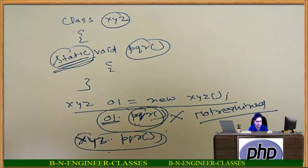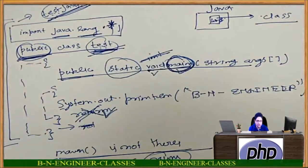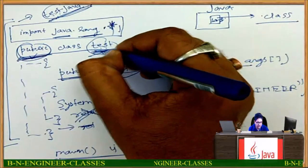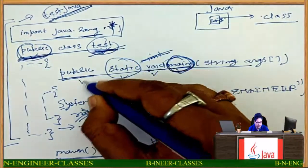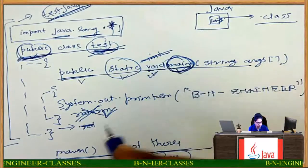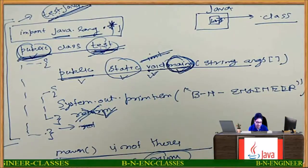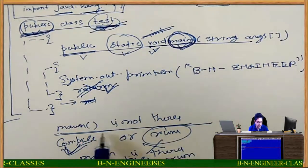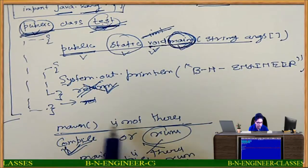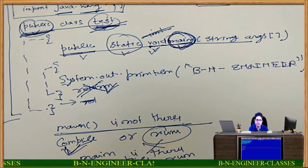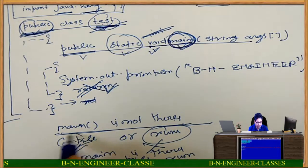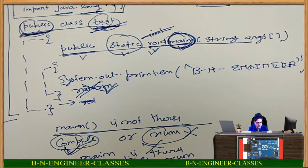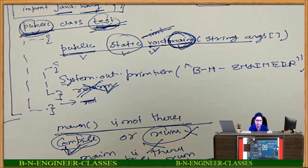So if I am going back to the previous page, I told you what is public, what is test, what is static, what is public, what is void, what is main, and the interpretation of each. If main is not there, a program without main can be compiled but it cannot be run. If main is there, then it can be compiled and run both.